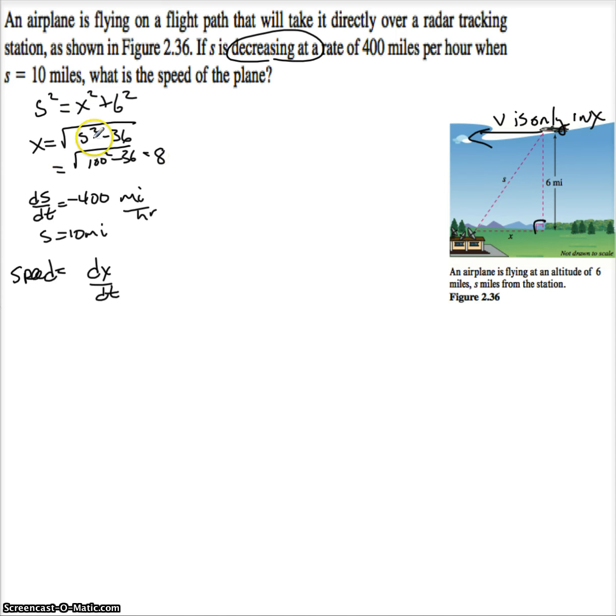Now let's go back to this equation up here. I know X squared plus 6 squared is S squared. So let me implicitly differentiate this whole thing. So this is 2X dx dt. Now the 6 squared, the derivative of that is 0. So this is 2S dS dt. So I know that dx dt is going to be equal to S over X times dS dt.